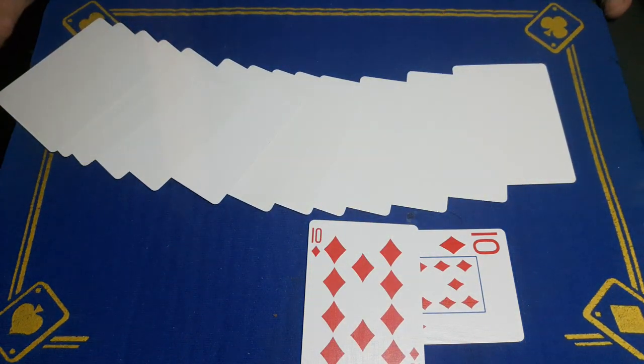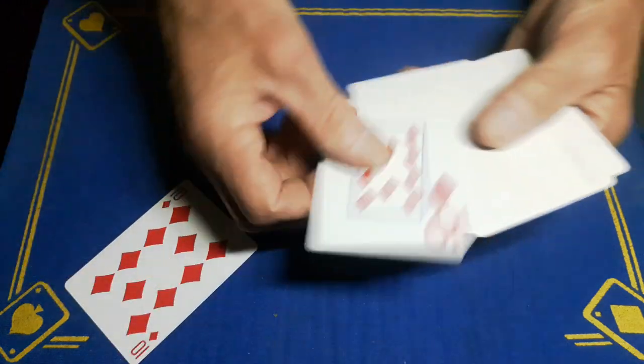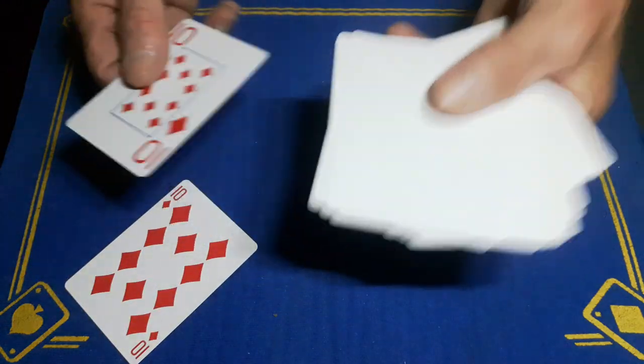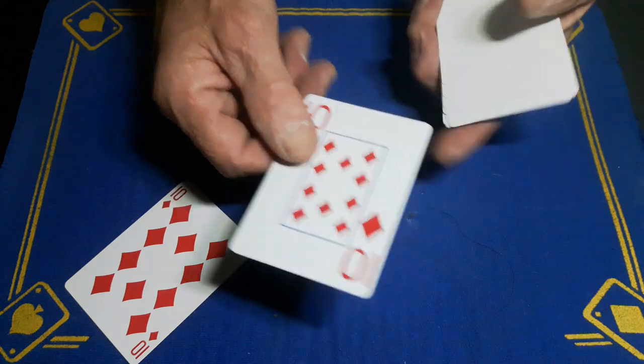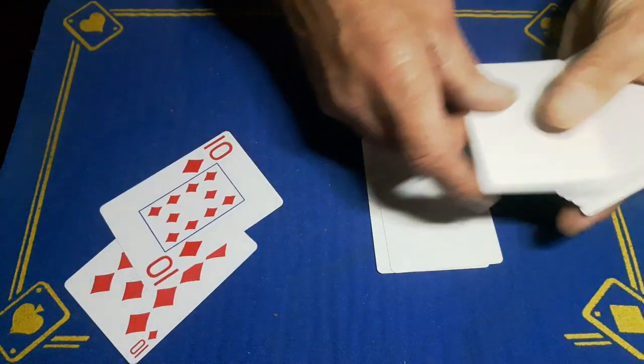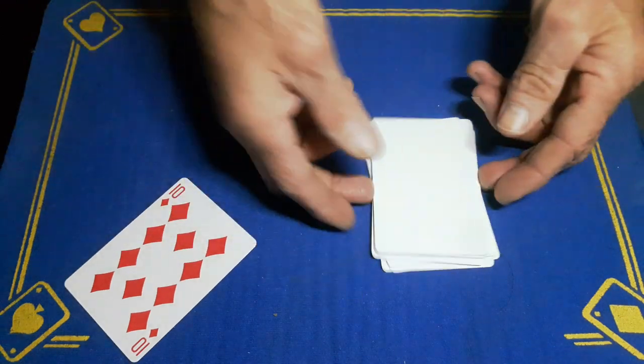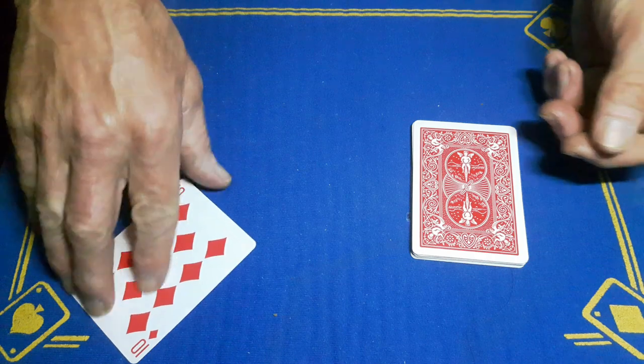So there you go guys, simple little trick. 14 cards in my hand: 13 blank, one matching face. This card goes in that one, two, three, four, five, six, seventh position from the top, and the rest is self-working.